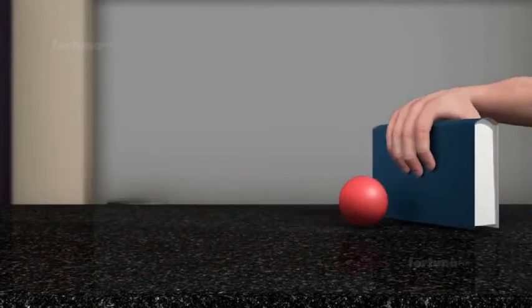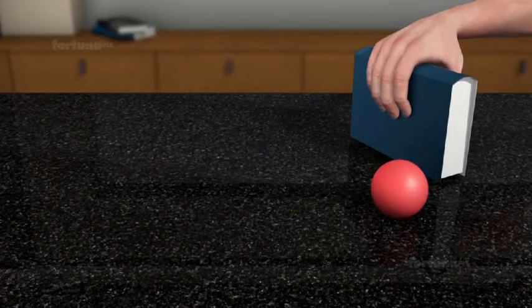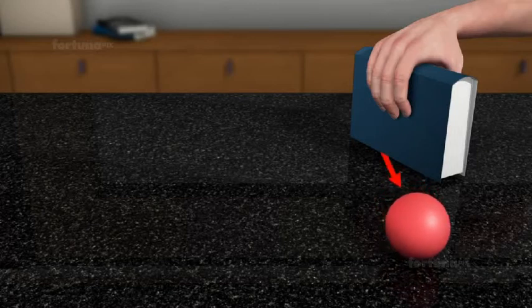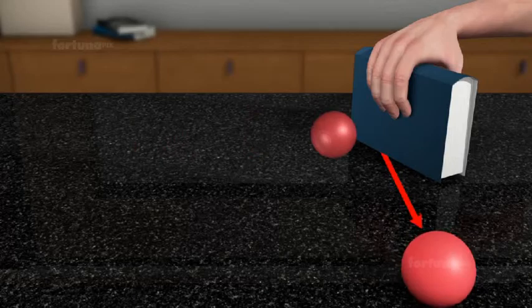The ball strikes the book and rolls away in another direction. In this case, the book is the force that has changed the direction of the moving ball, which would have continued to move in its original direction.